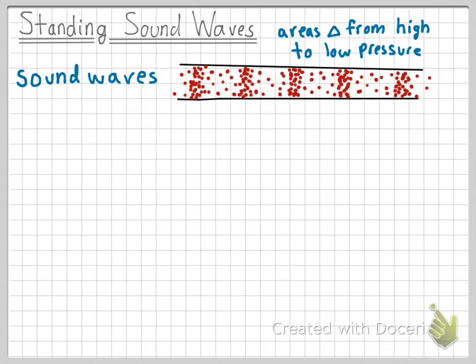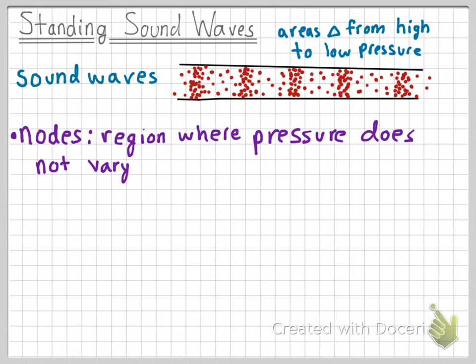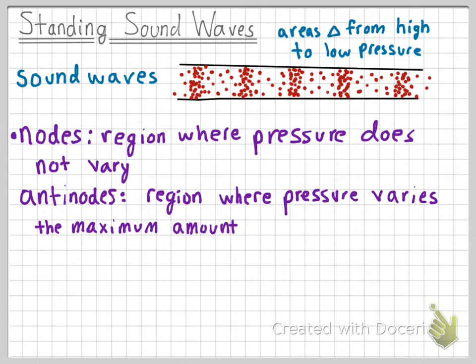So let's look at standing waves for sound for a moment. We know that sound waves are simply just alternating areas of high and low pressure and look something like this. Nodes for sound waves are the regions where the pressure stays constant and does not vary, kind of just how before the nodes for the string or the slinky wave was when the slinky did not move at all. And the antinodes for sound waves are when the pressure varies the maximum amount.